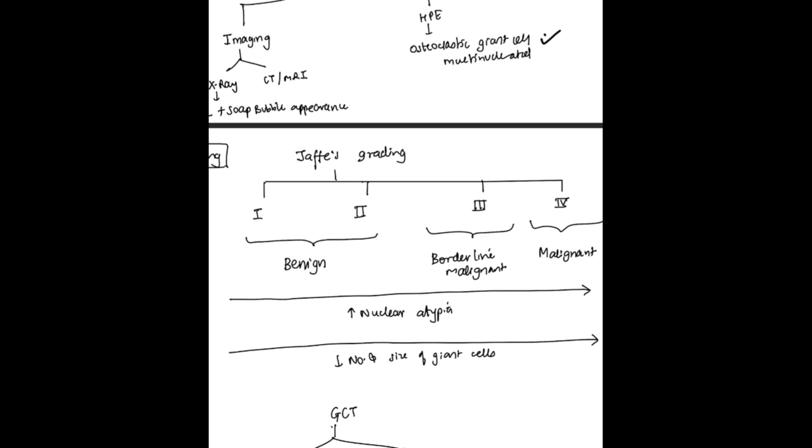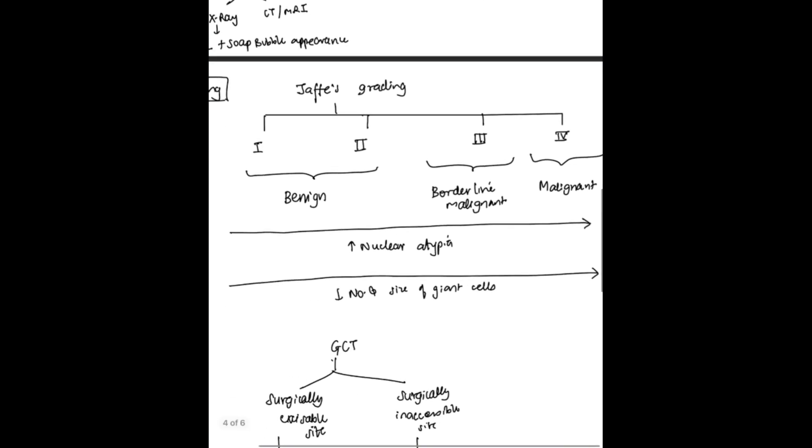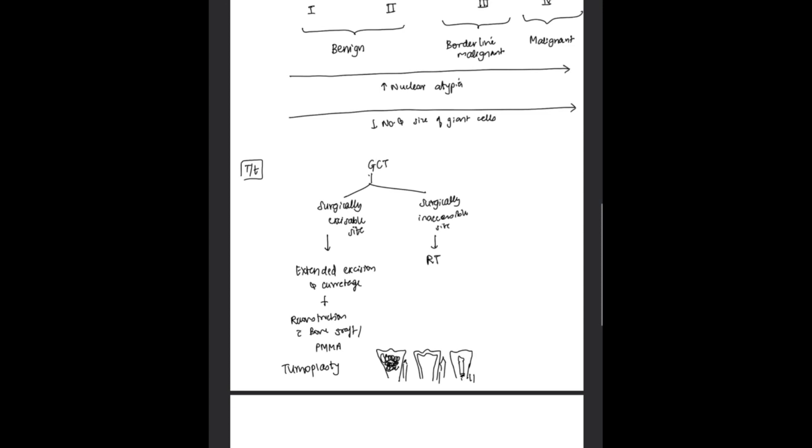What happens is going from grade 1 to grade 4, nuclear atypia increases while the number and size of giant cells decreases. Which means grade 1 has got more number of giant cells and huge giant cells while nuclear atypia is none or minimal, while grade 4 has got maximum nuclear atypia and the giant cells are least in grade 4.